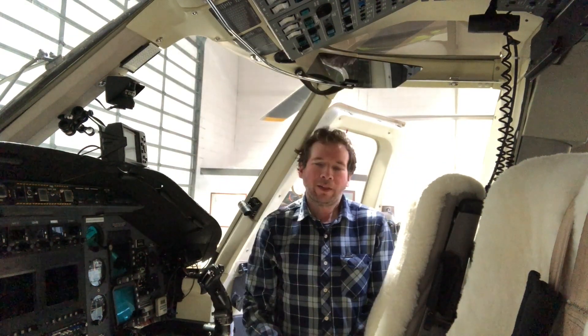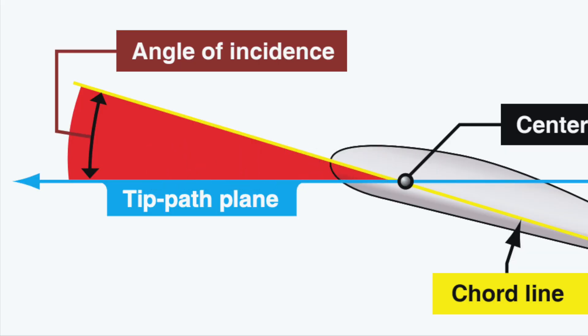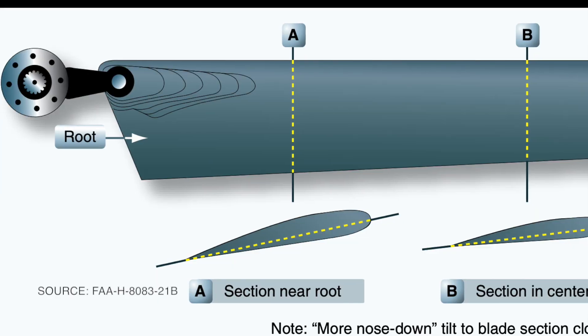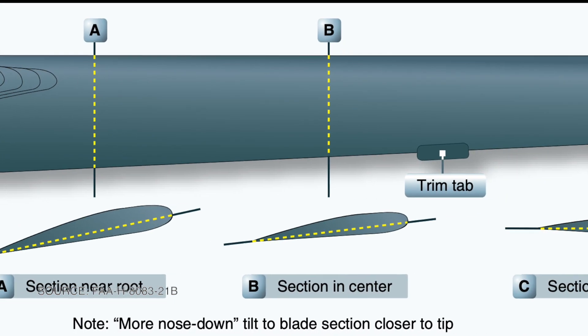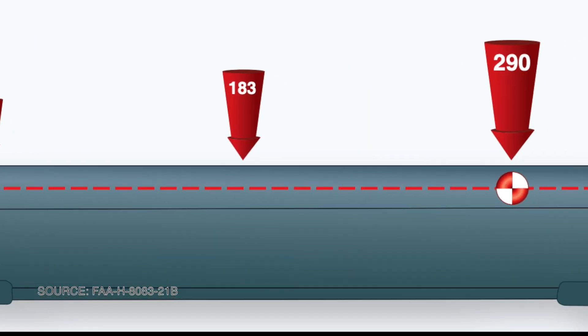The chord line defines two critical angles important for pilots. First, the blade pitch angle — the physical angle between the chord line of the main rotor blades and the plane of the rotor disc, shown as the angle of incidence. This is initially set when the rotor blades are mounted to the helicopter, and it typically decreases as you move outboard toward the blade tip. This change in pitch angle is called blade twist, meaning the pitch inboard near the rotor mast is greater than outboard. Twist attempts to balance lift over the entire blade span, as air travels faster in the outboard portions.